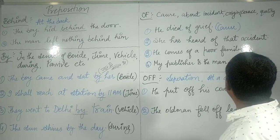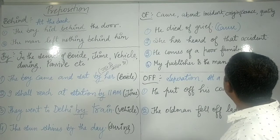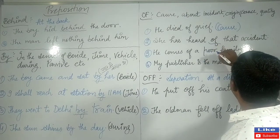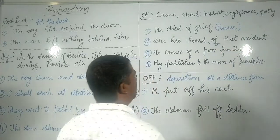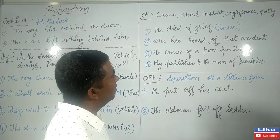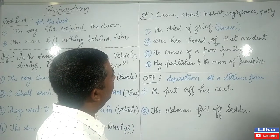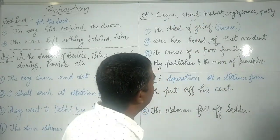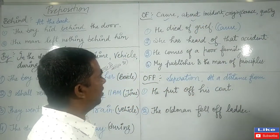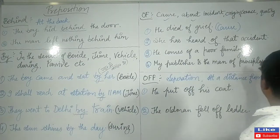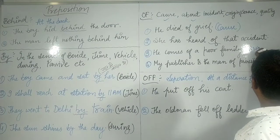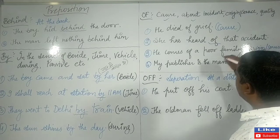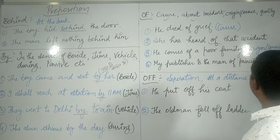The second use of 'of' is to express 'about.' For example: she has heard of that incident — meaning she has heard about that incident, about that event. The third use is origin or source: he comes of a poor family — meaning he comes from a poor family, indicating his origin.